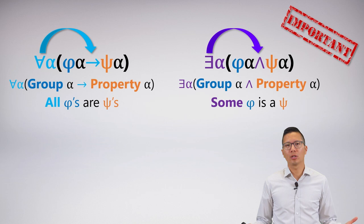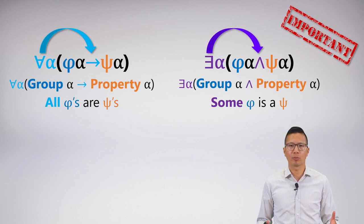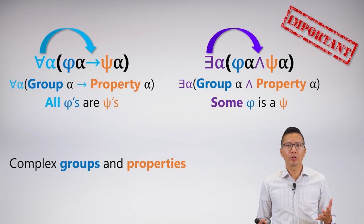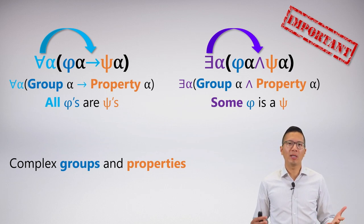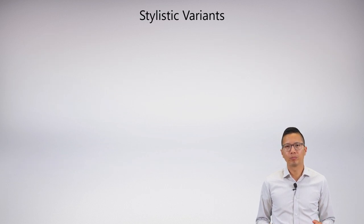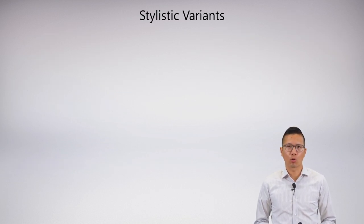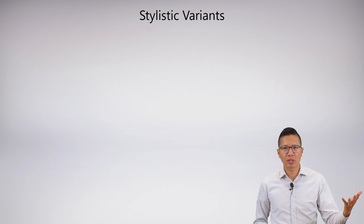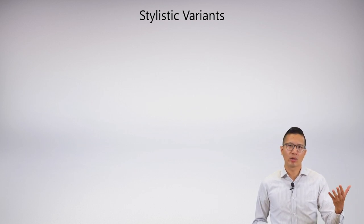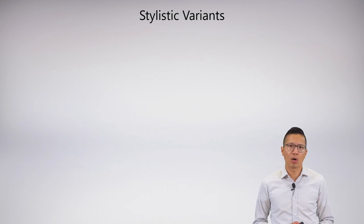Last video, we introduced the canonical forms of symbolization for the quantifiers, and we talked about quantifier meaning. We looked at some very simple examples, but really what we need to do is look at complex groups and properties and learn how to symbolize them. What we're going to start with are the stylistic variants of our quantifiers. Remember that we had lots of stylistic variants for all our connectives, and now the same thing applies to the quantifiers.